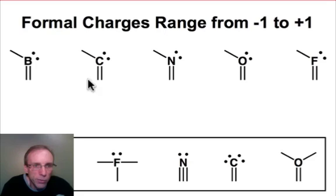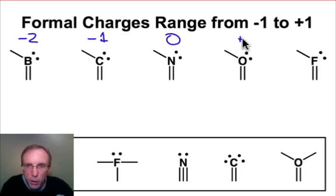And so, our analysis gives boron in this configuration with a double bond, a single bond, and a lone pair domain a formal charge of minus 2. For carbon in that arrangement, we have formal charge of minus 1. Nitrogen is neutral. Oxygen is plus 1. Fluorine is plus 2.